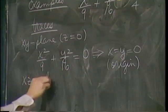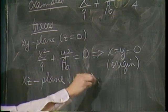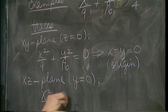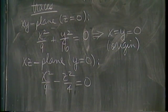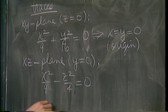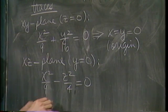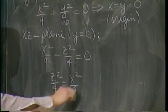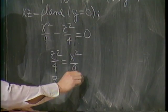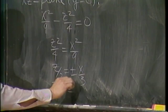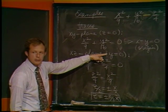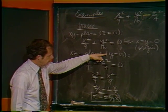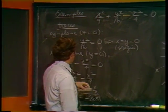Maybe we'll get something better in the XZ plane. Set Y equals 0. We get X squared over 9 minus Z squared over 4 equals 0. What's that? Well, that's something you probably haven't seen too much recently. It's a lot easier than you think. We could say that Z squared over 4 equals X squared over 9. Take square roots of both sides - Z over 2 is plus minus X over 3, or Z is plus minus 2/3 X.